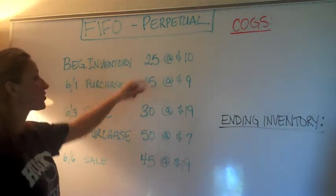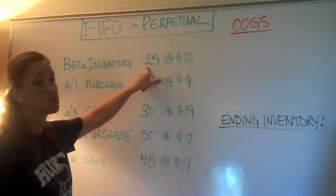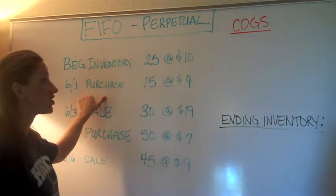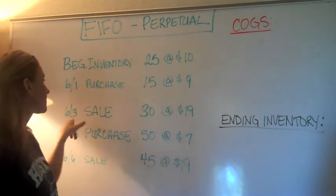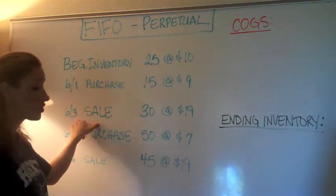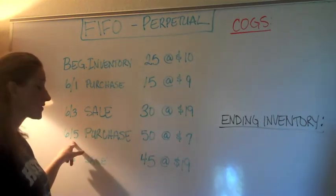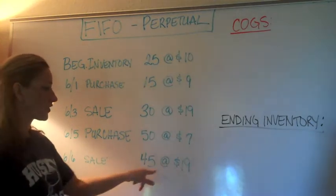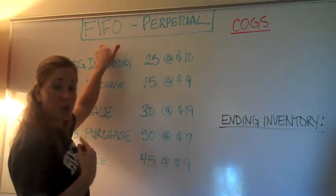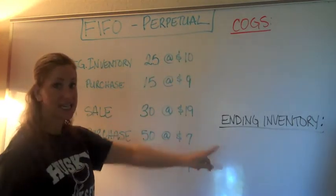We have a beginning inventory of 25 units at $10 cost. We purchased 15 more units on June 1st at $9. We sold 30 units at $19 on June 3rd. We purchased 50 more units at $7 each on June 5th, and then we had a sale on June 6th of 45 units at $19. So let's use the FIFO perpetual method to determine cost of goods sold and ending inventory.